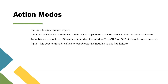The first action mode is input. This is a very common action mode which you must have seen while using Tosca. It is used to input values into test objects — something like an edit box where you are trying to input some value. You will by default use this action mode called input.